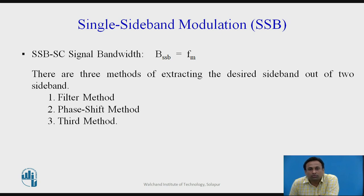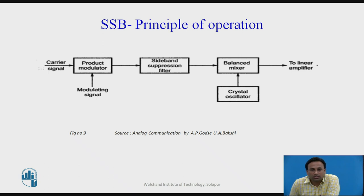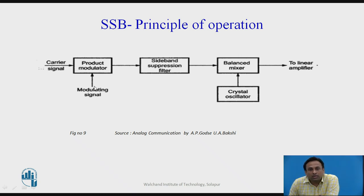There are three methods to extract the desired sideband: the filter method, the phase shift method, and a third method. In the filter method, the carrier and modulating signal are applied to a product modulator (balance modulator), which suppresses the carrier and produces LSB and USB at the output. Depending on the desired sideband, a high pass filter is used to pass USB or a low pass filter is used to pass LSB, suppressing the other sideband.